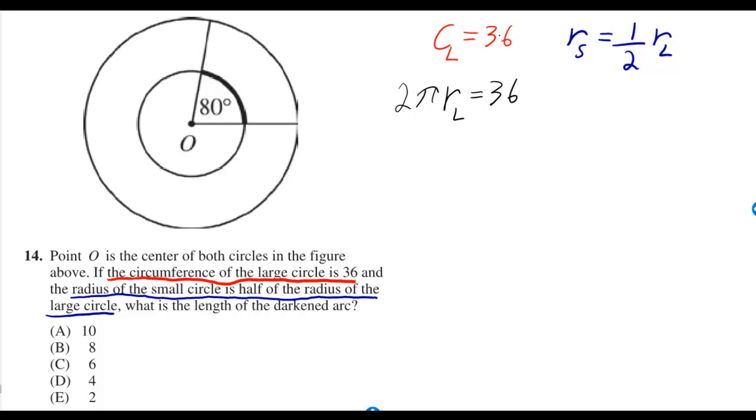From knowing the circumference of the large circle, we can figure out the radius of the large circle by using 2πr for c. Dividing by 2π gives us the radius of the large circle as 18 over π.